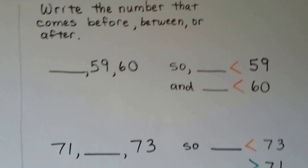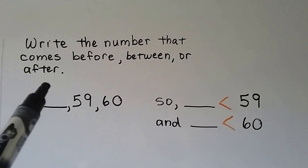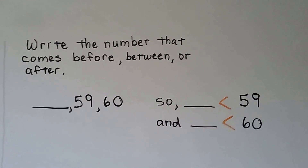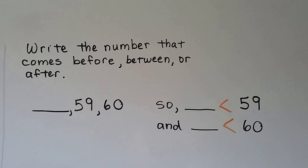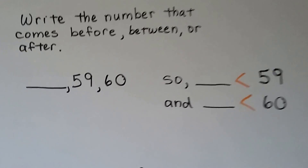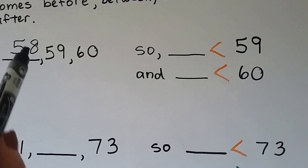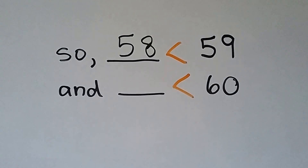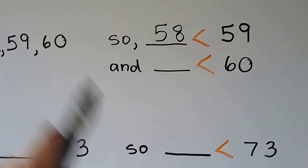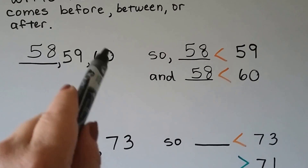Write the number that comes before, between, or after. What number comes before fifty-nine? We have an unknown number, then fifty-nine, then sixty. The number before fifty-nine would be one less — we take one away from the ones place and get fifty-eight. That means fifty-eight is less than fifty-nine because it comes before it when we're counting. Fifty-eight is also less than sixty because it comes before sixty. It doesn't have to come right before it, as long as it comes in front of it.